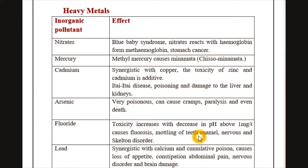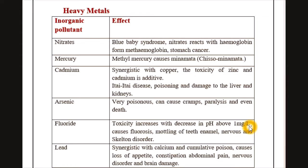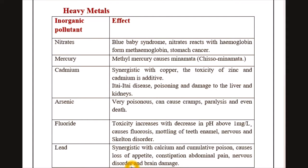The next pollutant is fluoride. The safe concentration of fluoride is 1 mg per litre. If the concentration of fluoride increases beyond this, it causes mottling of teeth enamel and nervous and skeletal disorders. Remember, fluoride concentration should remain at 1 mg per litre only. The next heavy metal is lead, which causes loss of appetite, constipation, abdominal pain, nervous disorders, and brain damage.